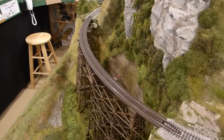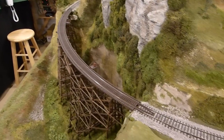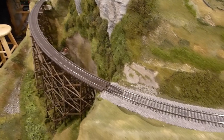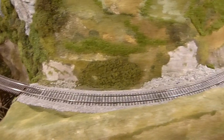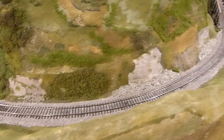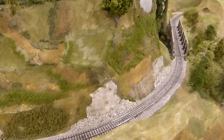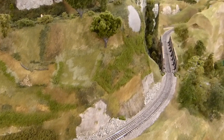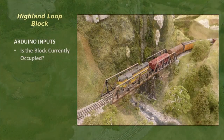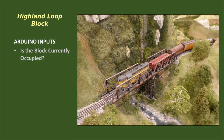Remember that the Arduino has to check the status of Highland Loop block to determine how to set the signals. So what is the Arduino looking at? The Arduino is checking three things. First, is the block occupied by a train, or is the block clear?